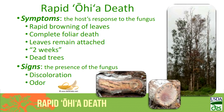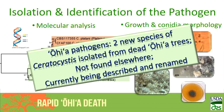Ceratocystis species A is similar to things causing canker stain of plane trees on the mainland and in Europe, and similar to an isolate found on syngonium. This is very different from a pre-existing Ceratocystis that causes black rot of sweet potatoes that had been here since the 1940s. Another species is similar genetically to something found here in Hawaii and also in Indonesia. So there are two new species of Ceratocystis isolated from these dead Ohia trees, and they have not been found elsewhere.